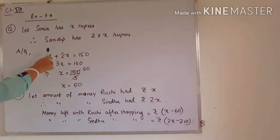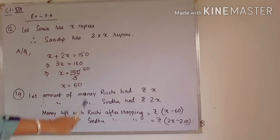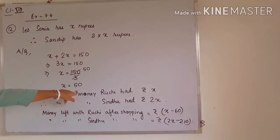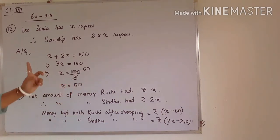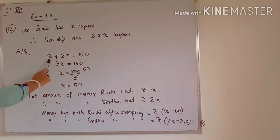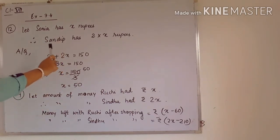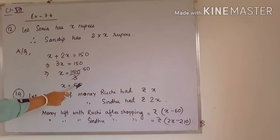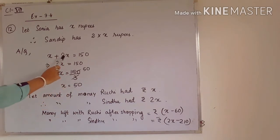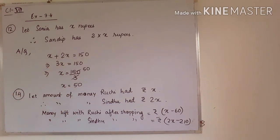So Sonia has 50 rupees, meaning Sandeep has twice 50, that is 100 rupees. You can also check the answer by adding the 2 amounts: one is 50 and the other is 100, so you can add and easily verify the answer.